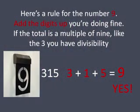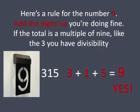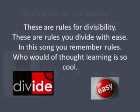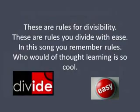Here's a rule for the number nine. Add the digits up, you're doing fine. If the total is a multiple of nine, like the three, you have divisibility.